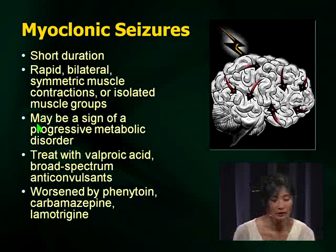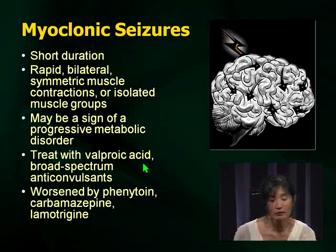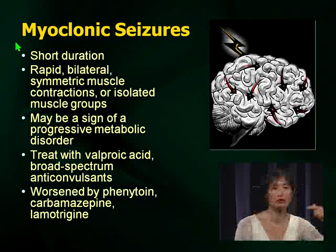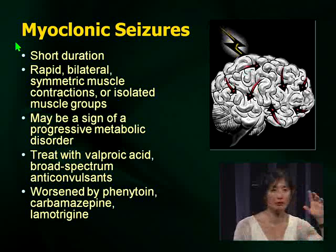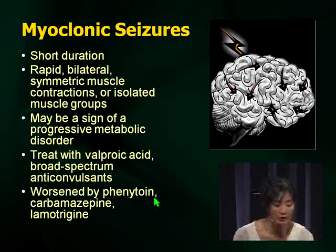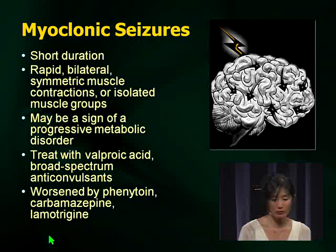For generalized seizures and myoclonic seizures, broad-spectrum anticonvulsants are effective and valproic acid works very well. The important thing about myoclonic seizures: you may get a scenario with a child that's got myoclonic seizures. Remember that myoclonic seizures can be worsened by phenytoin, carbamazepine, or lamotrigine. Do not choose those medications when dealing with a child with myoclonic seizures.